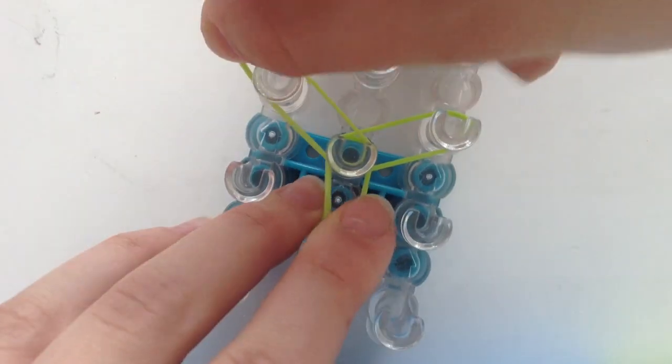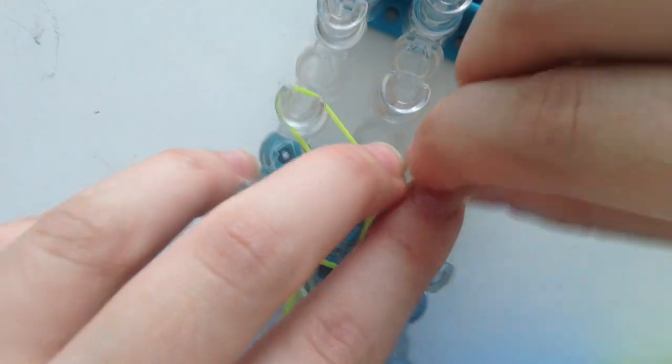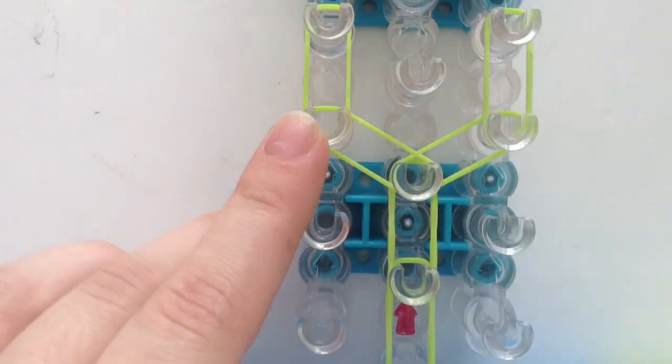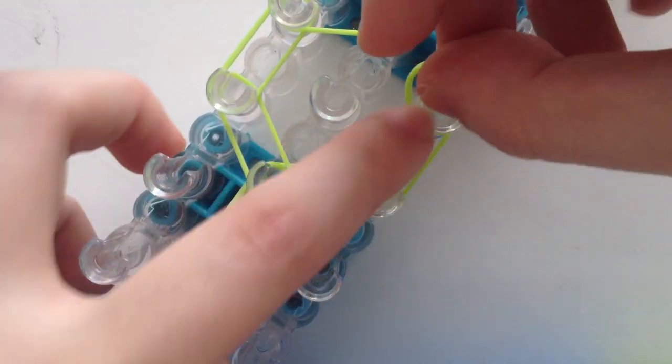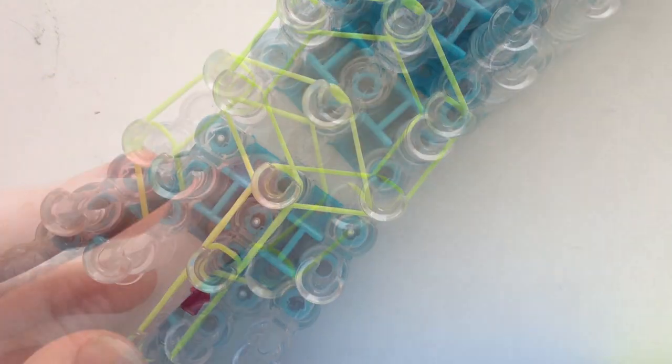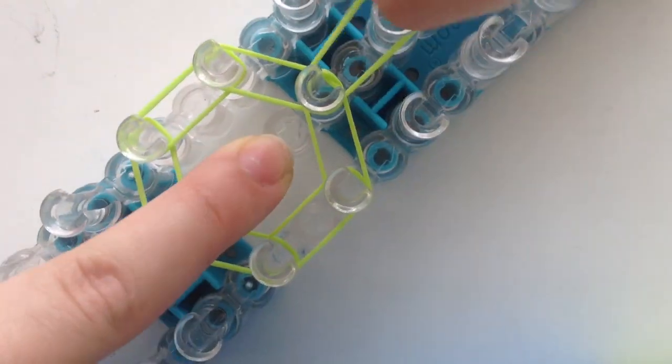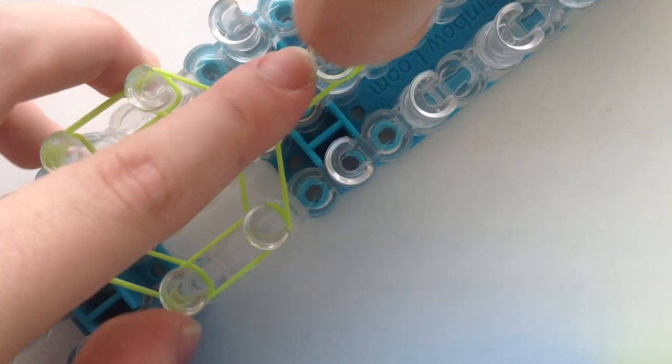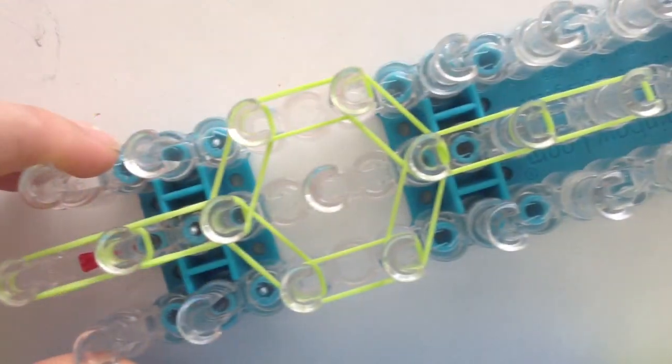And then your third band you want to extend it out into a V. And then your next band you want to create a hexagonal shape with the bands and add two extending bands and this will be part of the ring.